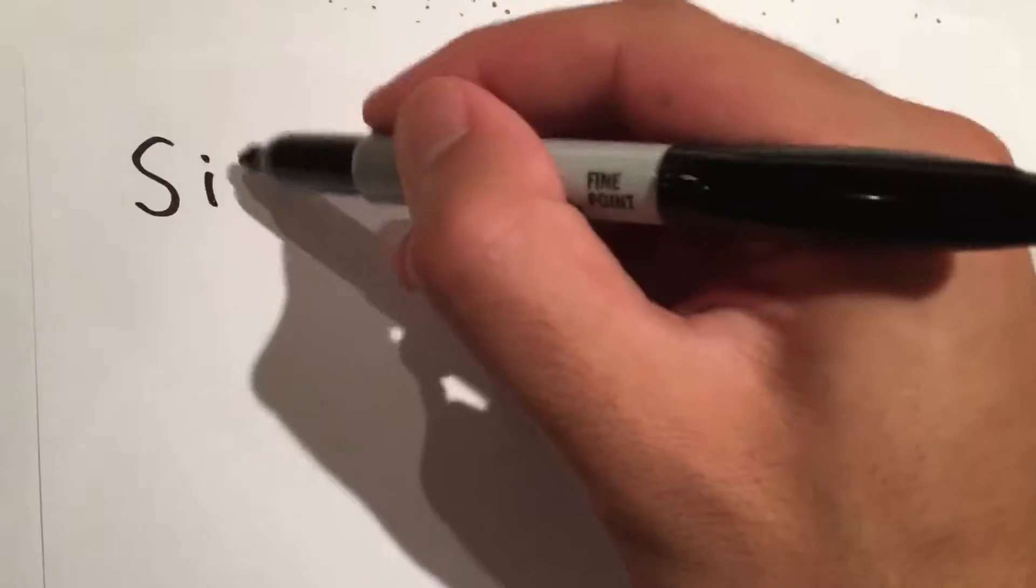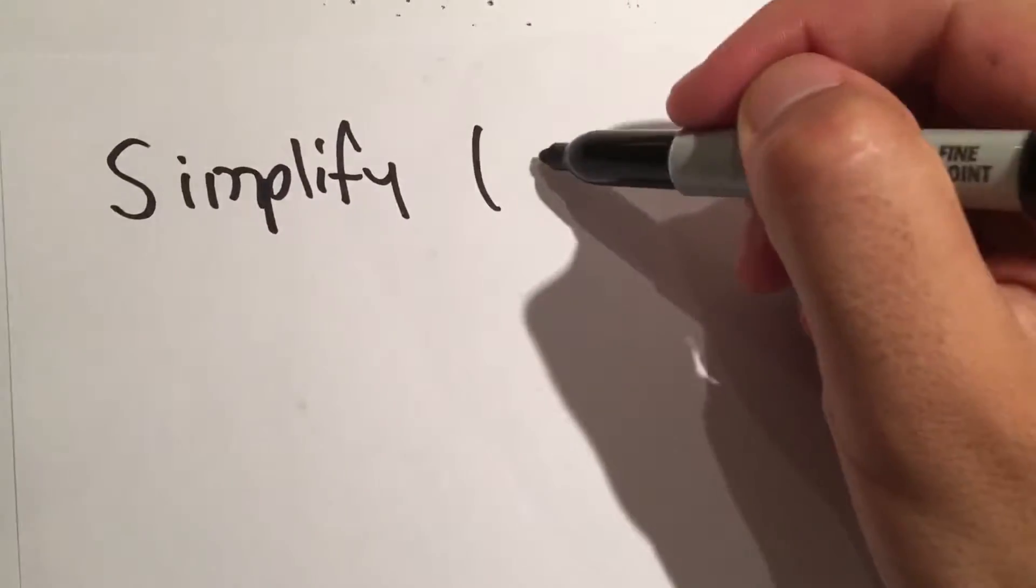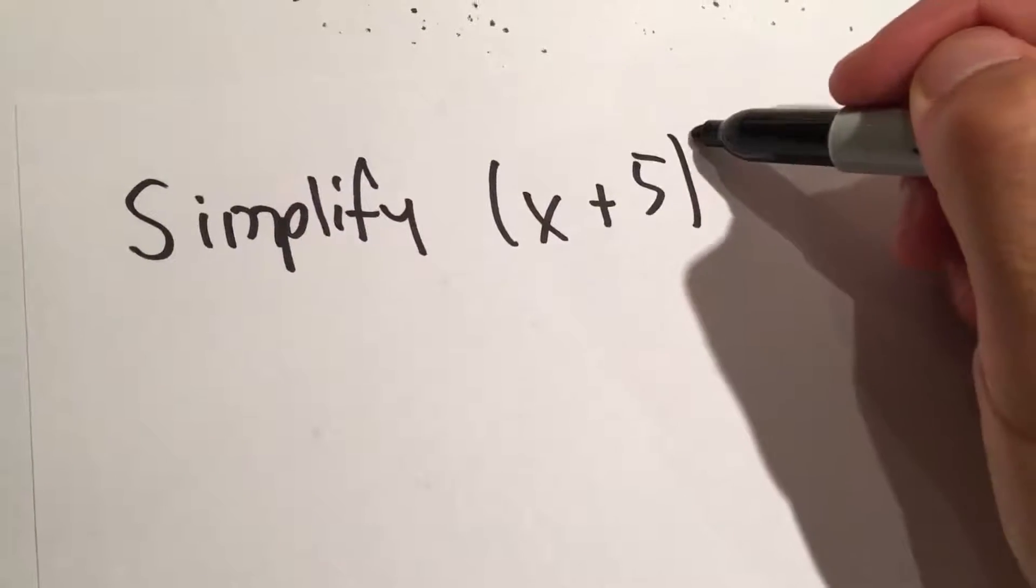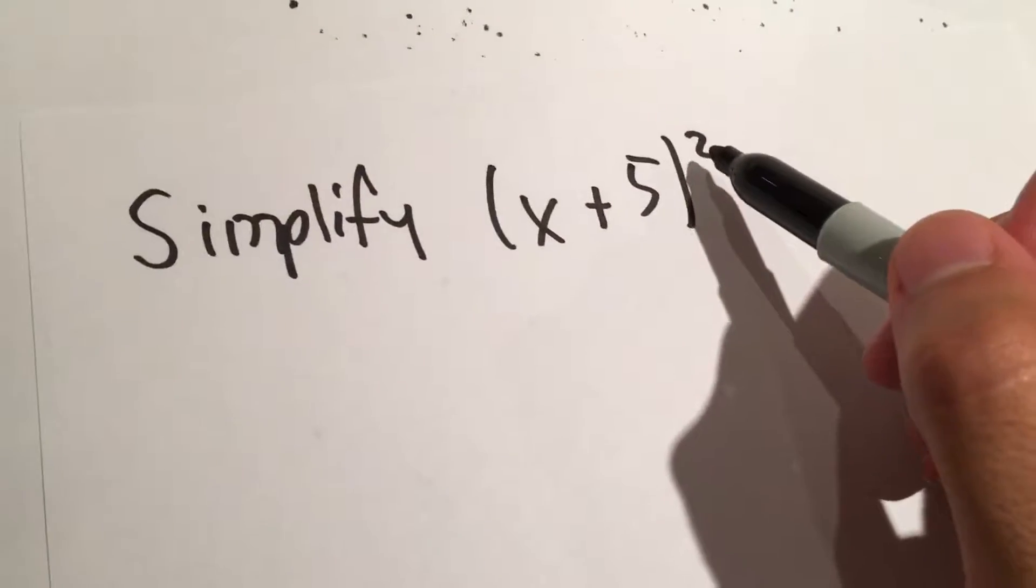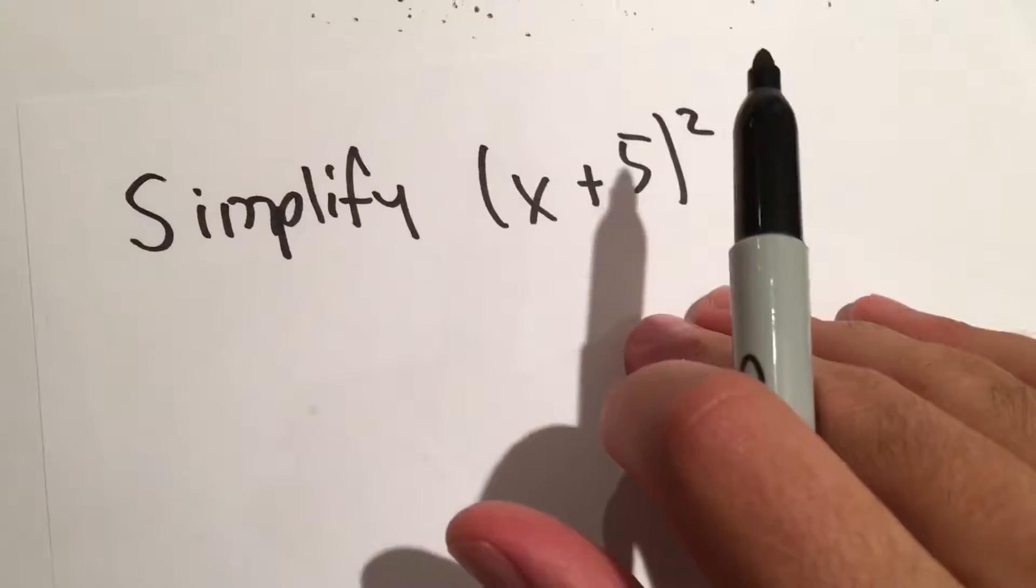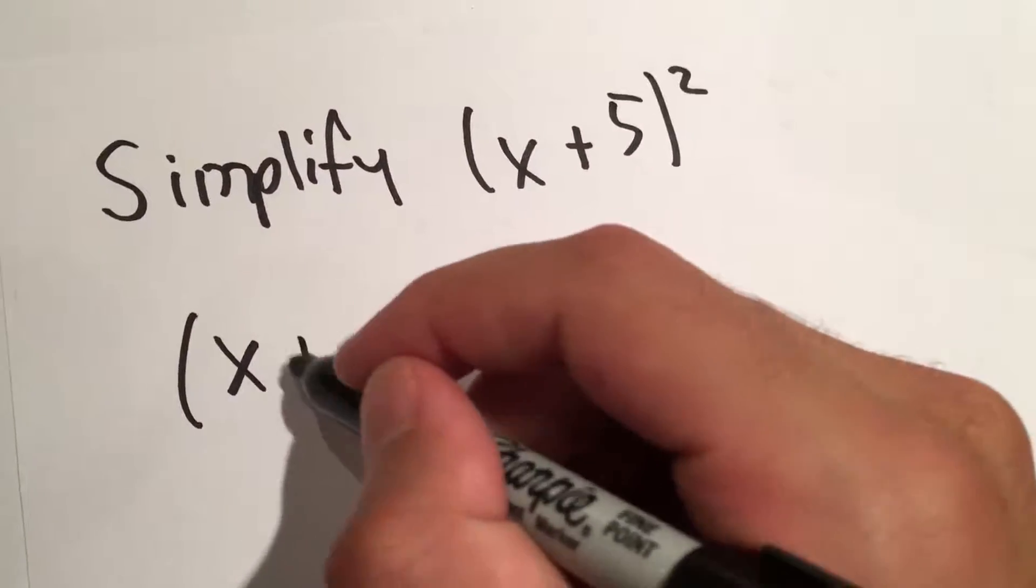I'm going to simplify x plus 5 squared. The square symbol, or the 2 up here, just means that we take this whole expression and multiply it by itself.